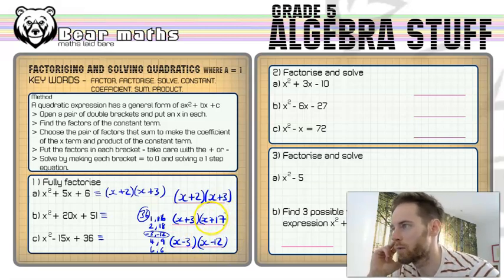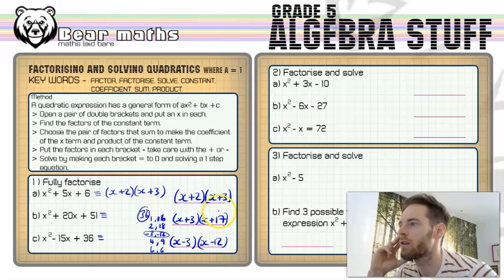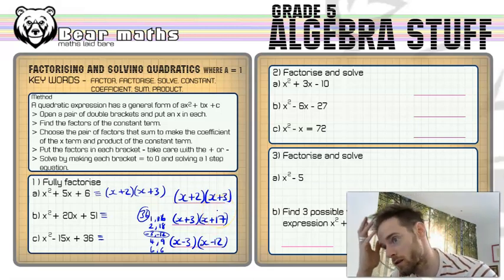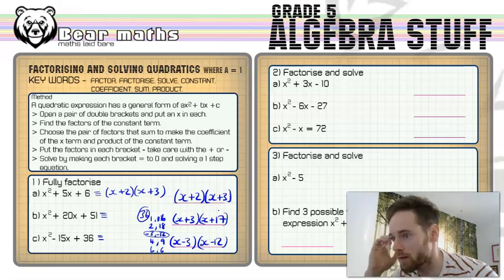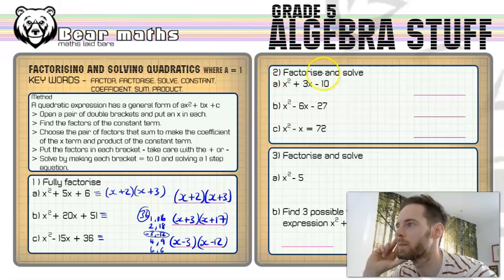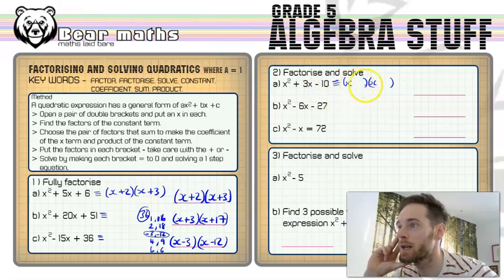Now moving on up to question two, we've got to factorize and this time we've got to solve as well. And solving actually for an extra mark is the simplest thing in the world. Factorize it first, then solve it.